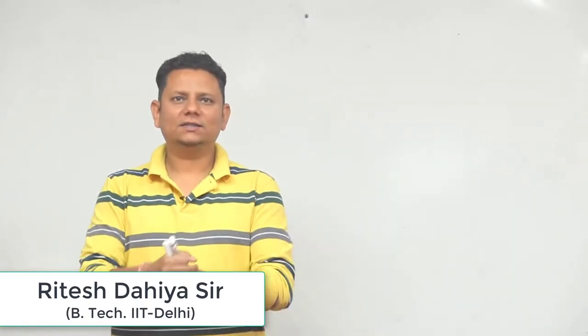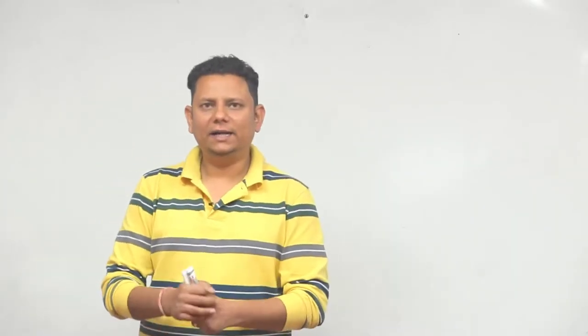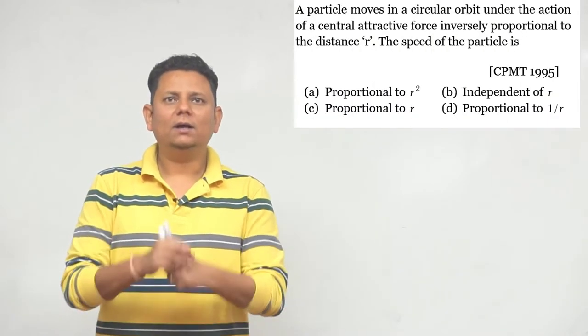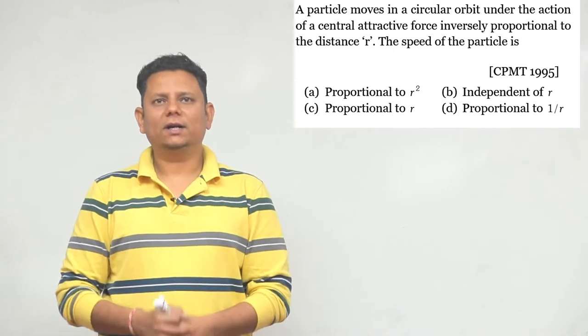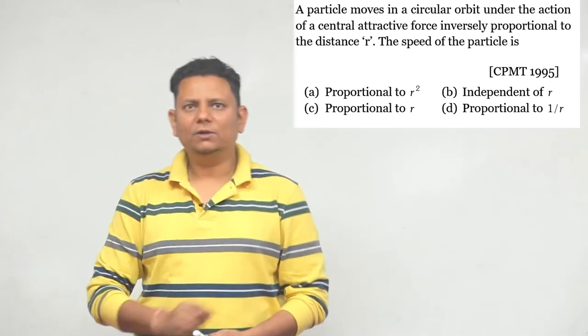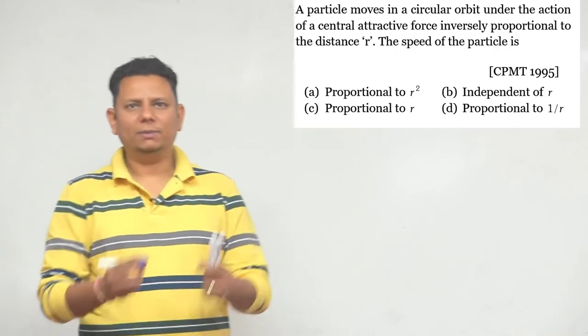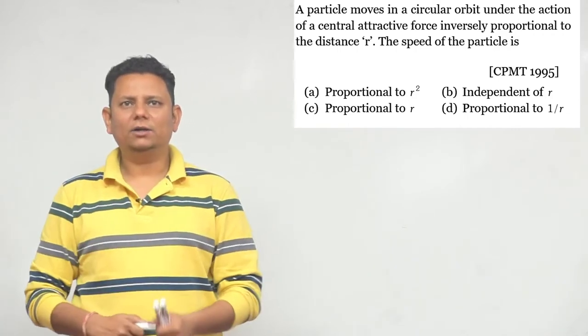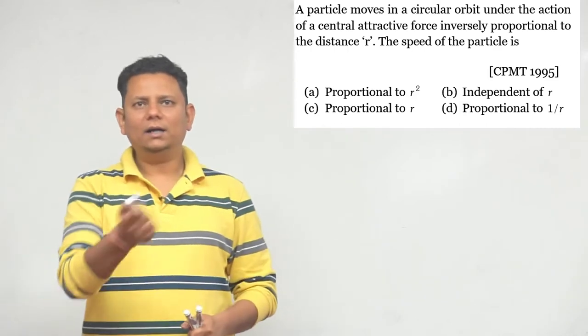Next question, this question was asked in the exam of NEET 1995. Question says a particle moves in a circular orbit under the action of a central attractive force inversely proportional to the distance r. Speed of the particle, what will it be proportional to? First option is proportional to r square, second is independent of r, proportional to r, or proportional to one by r.